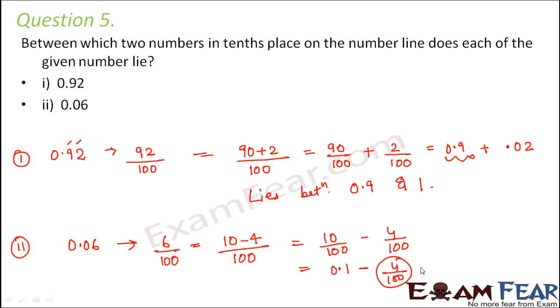Now 10 by 100 would be 0.1 minus 4 by 100. So this 4 by 100 is something which is less than 1. So 0.1, you subtract something from that 0.1. So that means it lies before 0.1. So it lies between 0 and 0.1 because this value is less than 0.1. So that means it lies somewhere before 0.1 and it is definitely greater than 0. So it lies between 0 and 0.1.